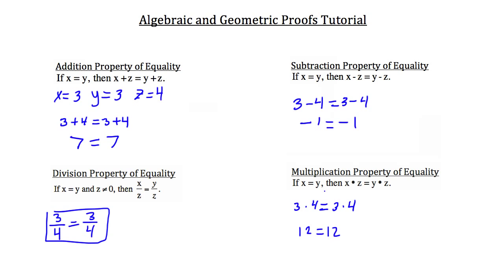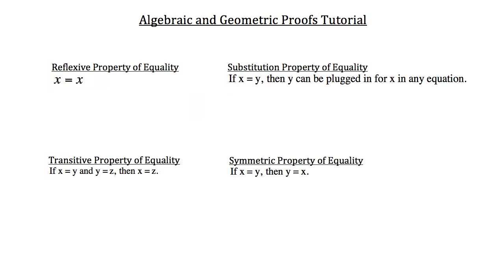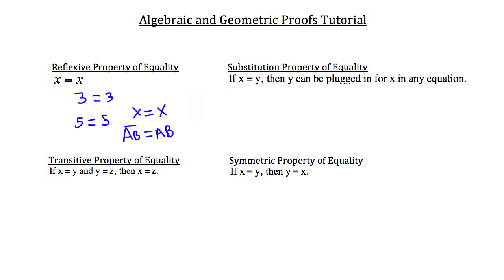Now let's look at the next four properties of equality. The reflexive property states that x equals x — at any given time, 3 equals 3, 5 equals 5, or a variable x equals x. It's often important in geometry to establish that a segment, like segment AB, is equal to itself. We'll see that applied in practice problems later.